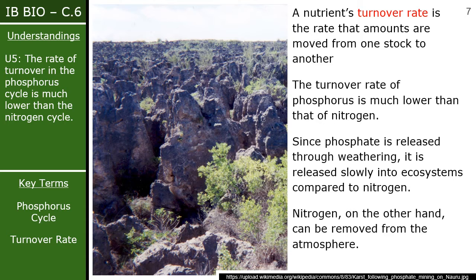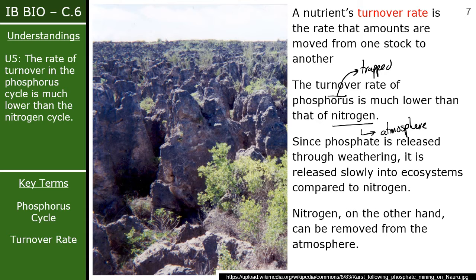A nutrient turnover rate is the amount of nutrients moved from one stock to another. In terms of farming and agriculture, it could mean how much harvest you get from a specific amount of field or seeds. The turnover rate for phosphorus is a lot lower than for nitrogen. This makes sense because nitrogen is readily available in the atmosphere, whereas phosphorus is trapped in rocks, requiring an extra mechanical process to break down those rocks before phosphorus can be released.